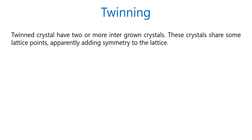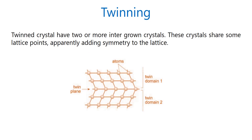First of all, what is twinning? Twin crystals have two or more intergrown crystals. These crystals share some lattice points, apparently adding symmetry to the lattice. For example, this diagram is showing the twin components — twin domain 1 and twin domain 2.